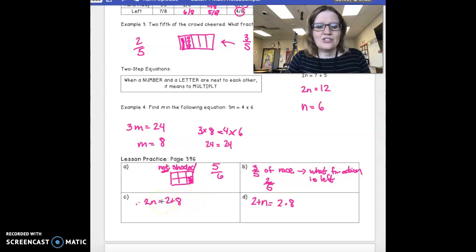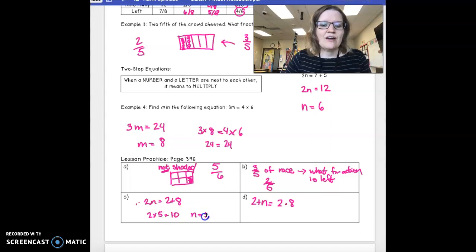Our next one is 2 times n equals 2 plus 8. So, we first work with what we know. 2 plus 8 is 10. 2 times something equals 10. And we know that that is 5. So, n equals 5.